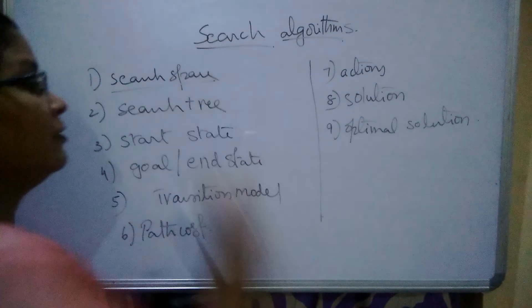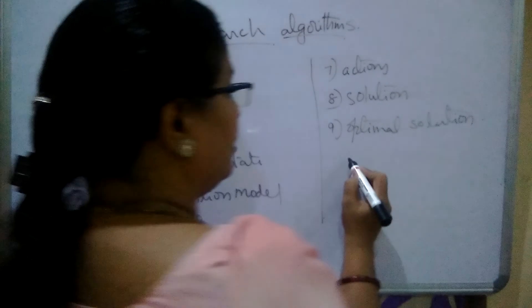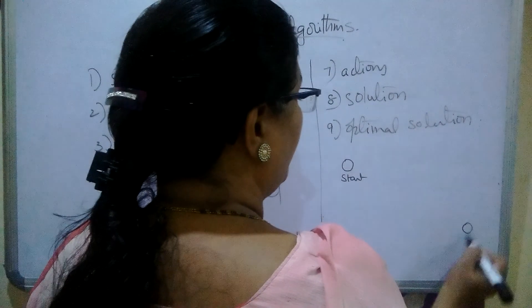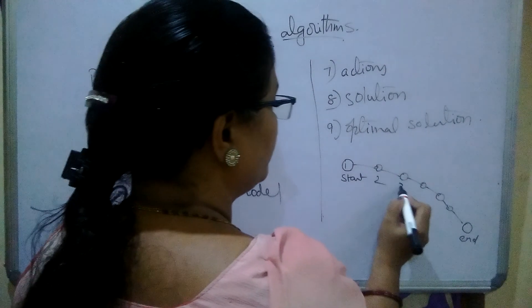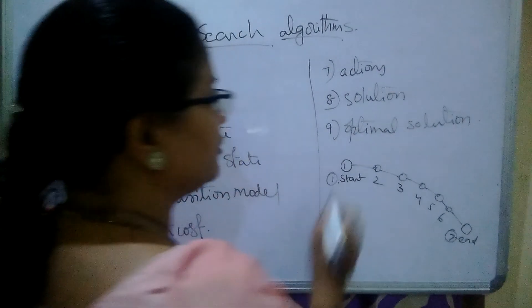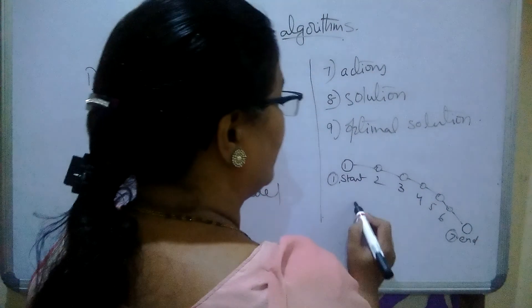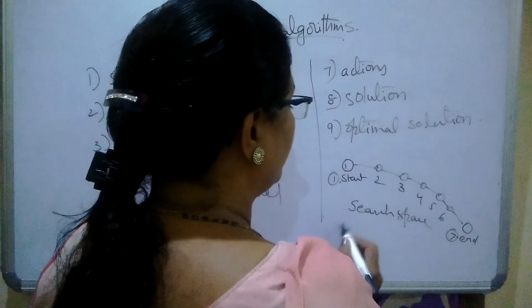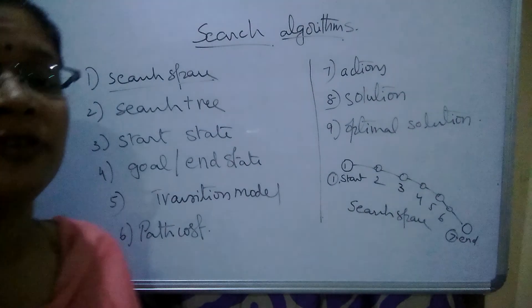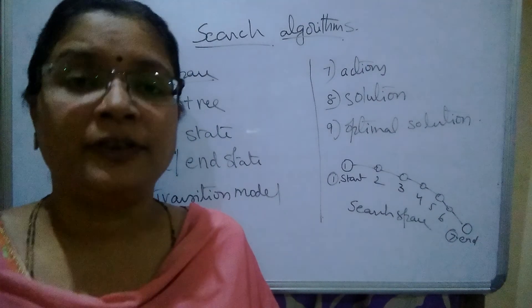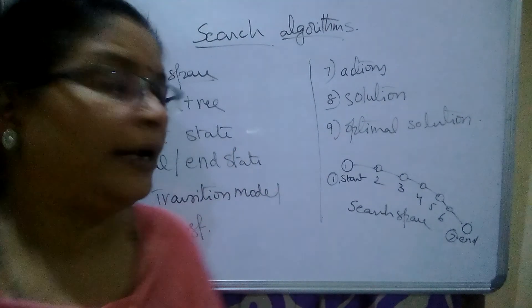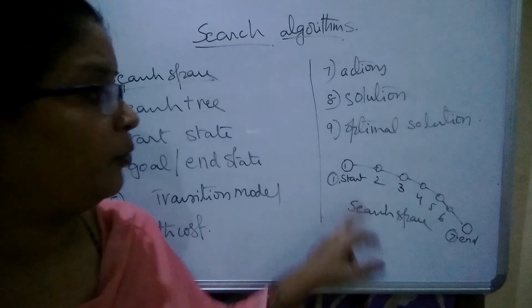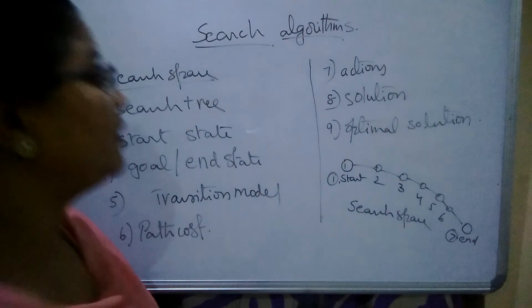First we see the search space. What is the meaning of search space? We started our search at the start state and we end our search at the end state. In the meanwhile, we come across various number of nodes — intermediate nodes. This is stage 1, stage 2, 3, 4, 5, 6, 7 — and the 7th one is the end state; the first one is the starting state. This entire sequence is called the search space. Search space means starting state to the end state, and how many intermediate states you come across — that is called the search space. Search space contains all the intermediate things you come across while searching for a goal. That entire thing is collectively called the search space.